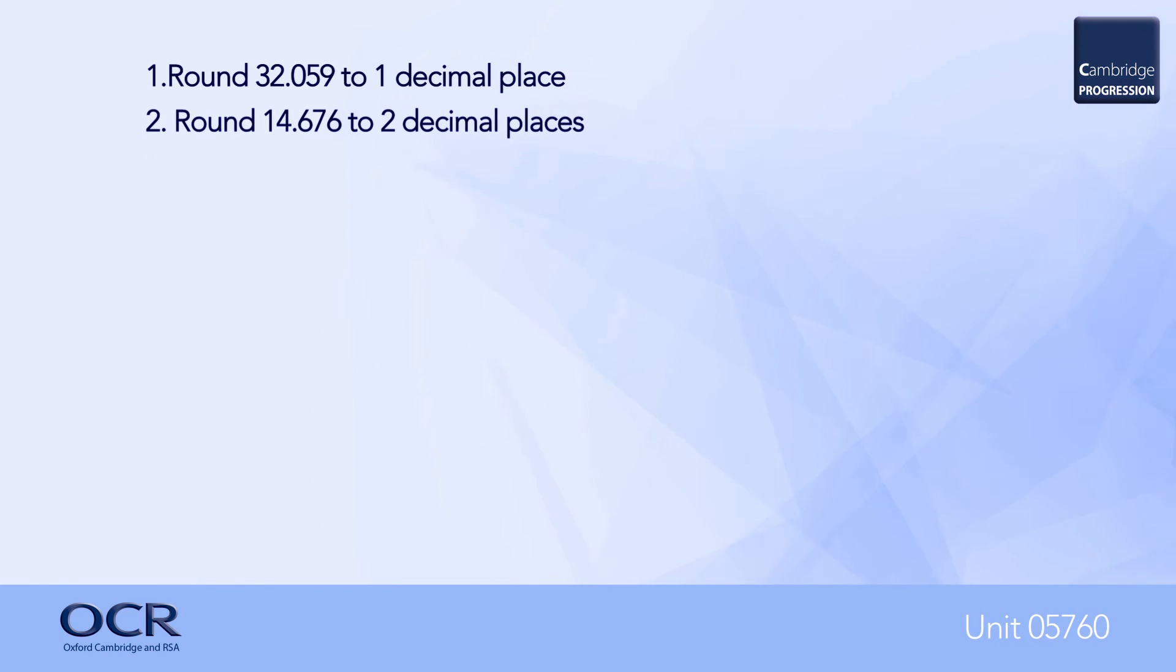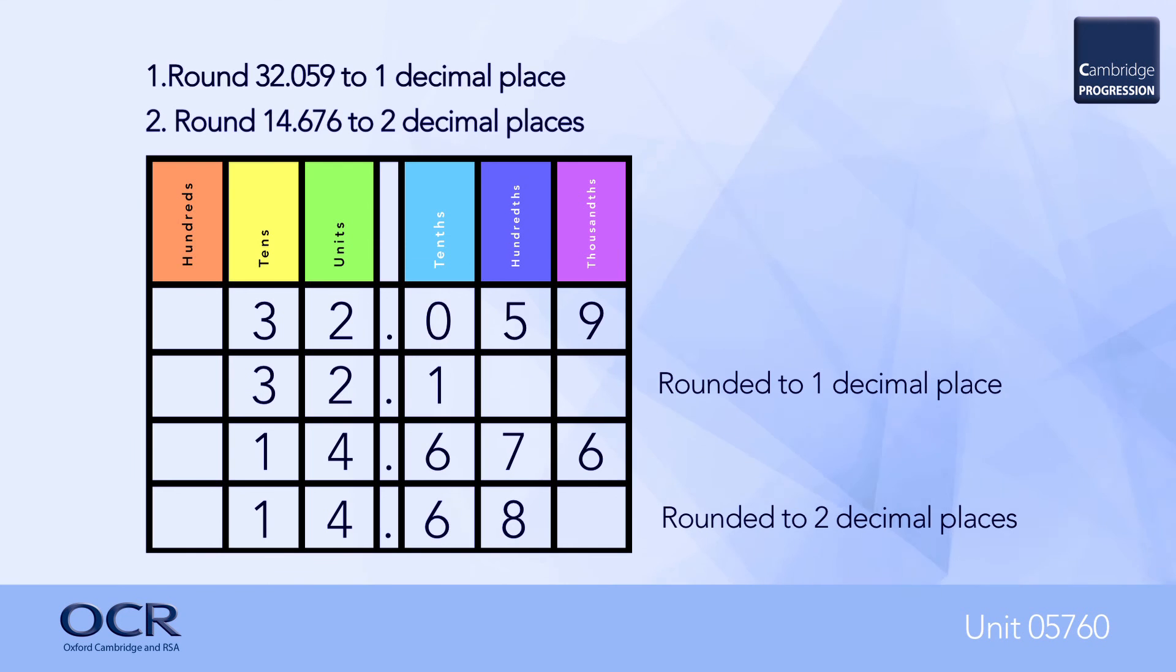The same procedure should be followed when rounding to a given number of decimal places. But the unwanted decimal digits can just be removed, there is no need to replace them with zeros, as shown here.